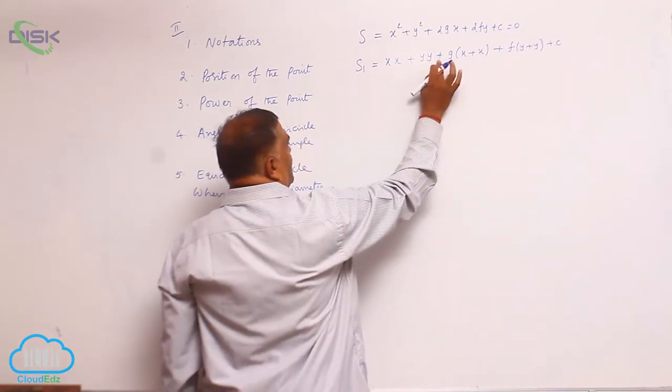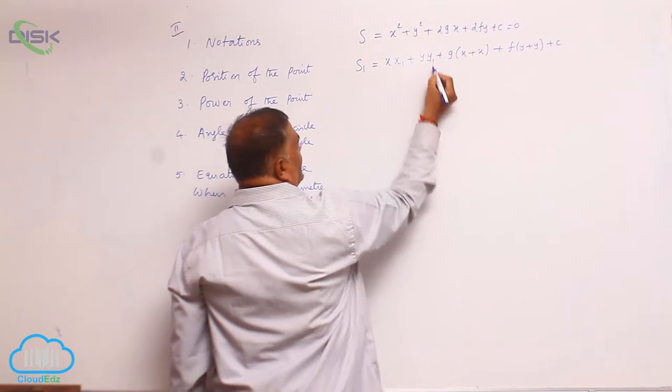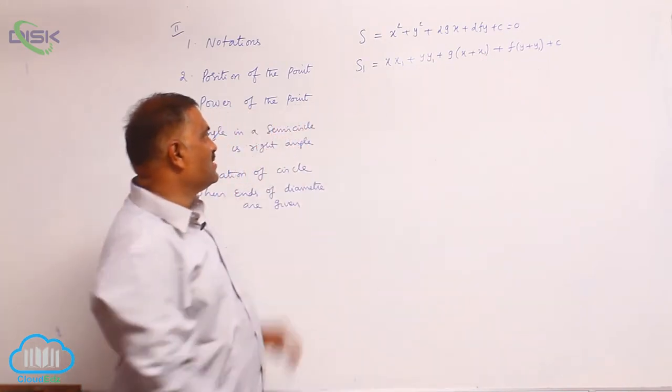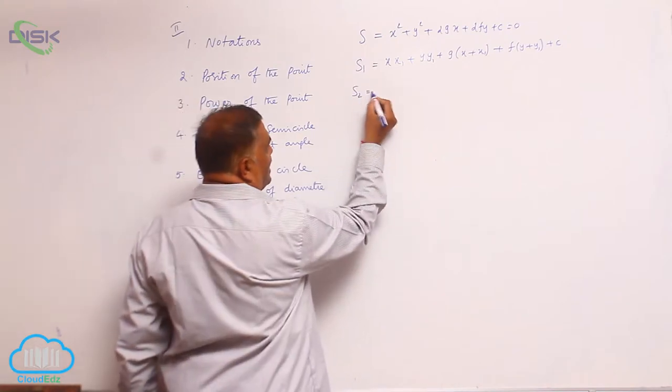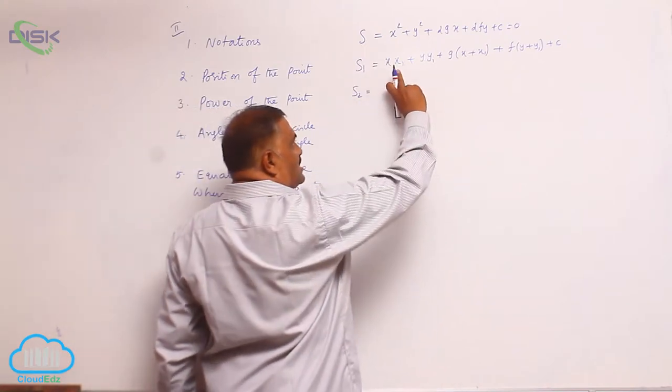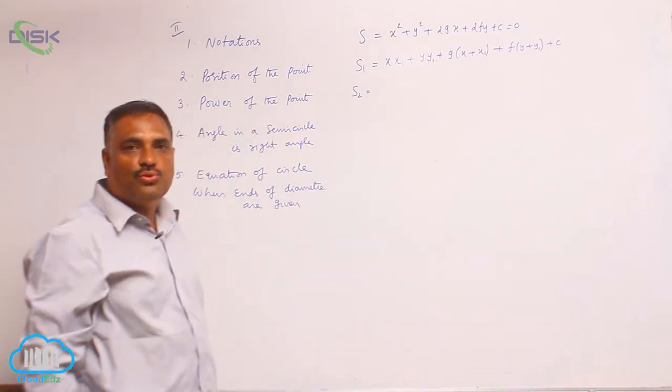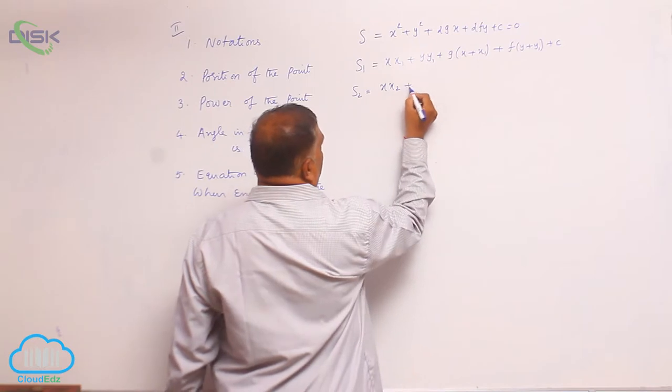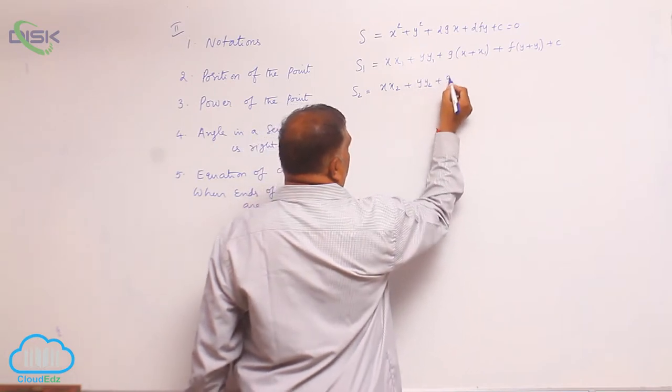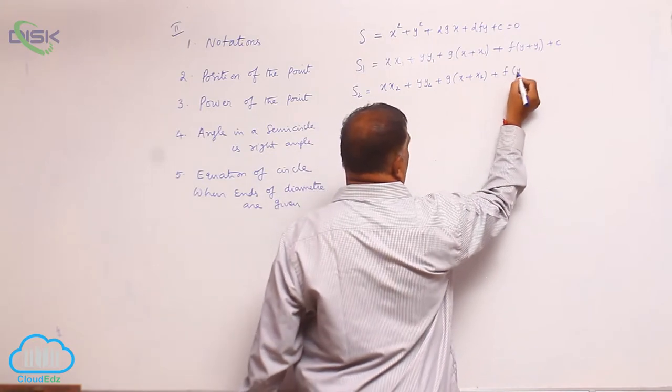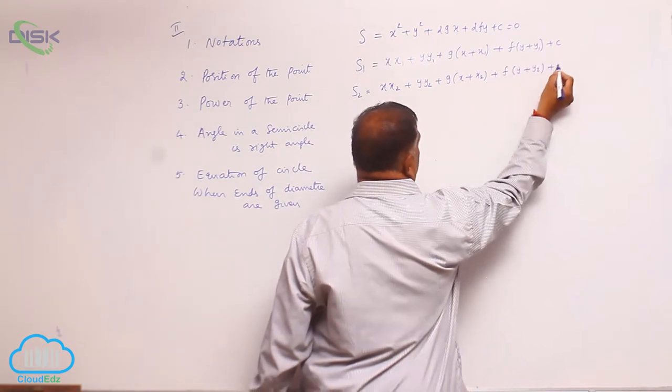In place of x, y let us write x₁, y₁. That means you are denoting like this. S₂ means the same, in the same fashion, but in place of x₁, y₁ we write x₂, y₂. That is x·x₂ + y·y₂ + g(x + x₂) + f(y + y₂) + c.